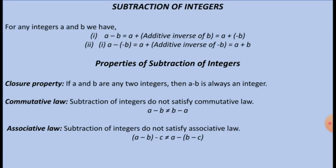The next slide covers subtraction of integers. For any integers a and b, a minus b equals a plus the additive inverse of b, which equals a plus (minus b). And a minus (minus b) equals a plus the additive inverse of minus b, which equals a plus b. Properties of subtraction: if a and b are any two integers, then a minus b is always an integer. Commutative law: subtraction does not satisfy commutative law — a minus b is not equal to b minus a. Associative law: subtraction does not satisfy associative law — (a minus b) minus c is not equal to a minus (b minus c).